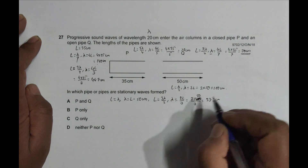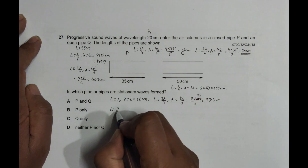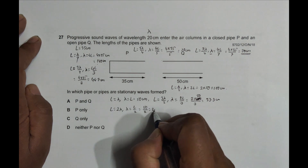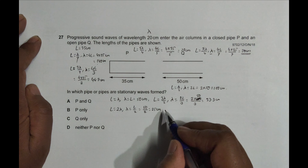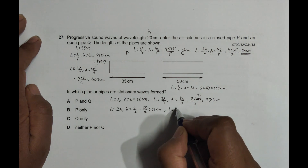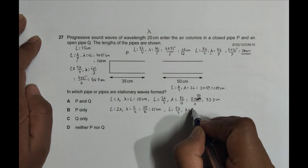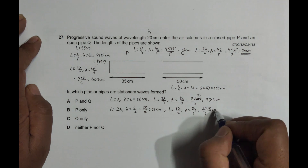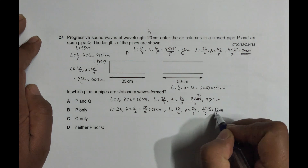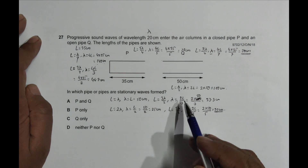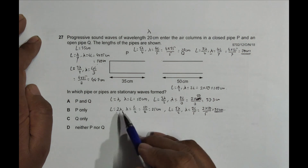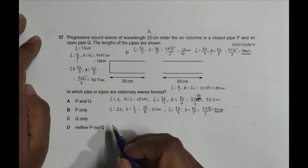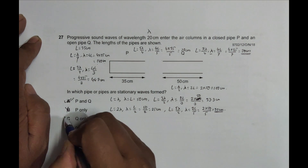Next condition: L = 2λ, giving λ = L/2 = 50/2 = 25 centimeters — not correct. Next: L = 5λ/2, giving λ = 2L/5 = 2 × 50 / 5 = 20 centimeters. So λ = 20 cm wavelength waves are possible here — this happens at the fifth harmonic: first, second, third, fourth, and fifth. So stationary waves are also possible in the open pipe Q. That means in both pipes stationary waves are possible, so the correct choice is choice A, and all others are incorrect.